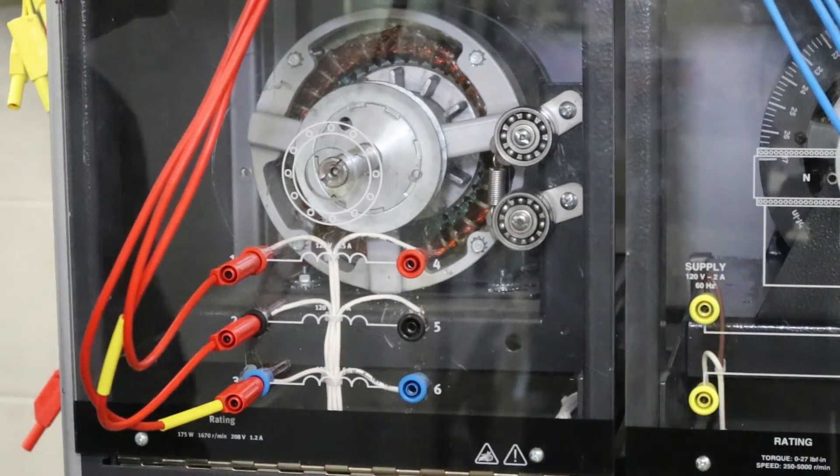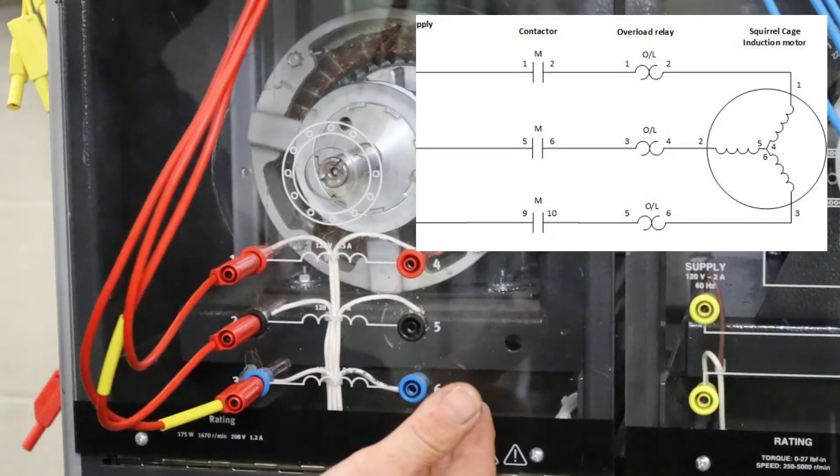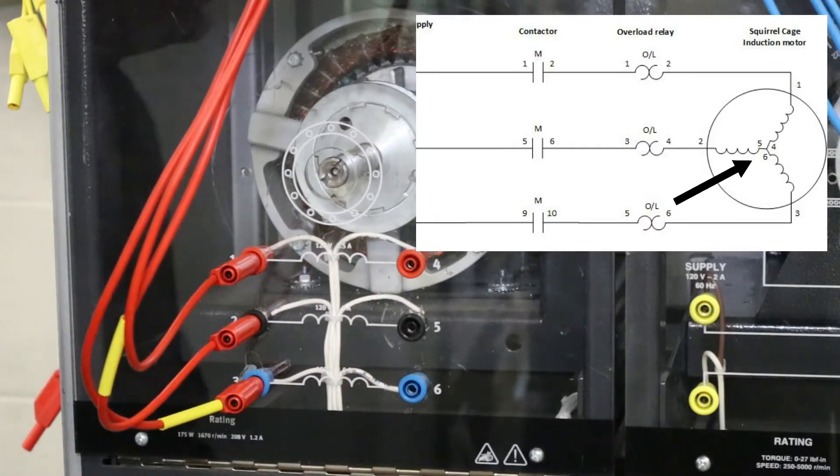If I were to power this up and attempt to operate it, the machine would not turn. According to the diagram, this machine was supposed to be wired in a Y configuration, and terminals four, five, and six had to be connected together.